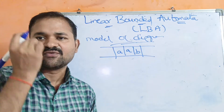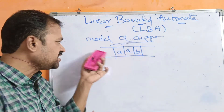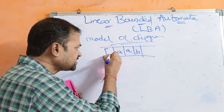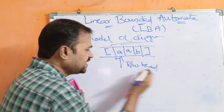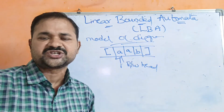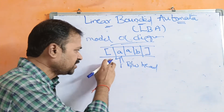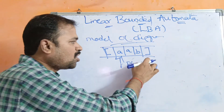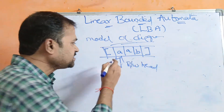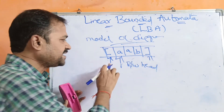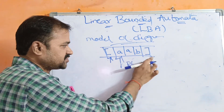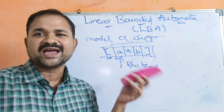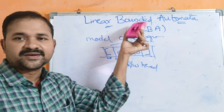Delta is a transition function which maps from Q × Γ to Q × Γ, and we can move the read/write head either left or right. The current state maps to the next state, and the current tape symbol is replaced with a new symbol — just like the Turing machine — while moving the head left or right.